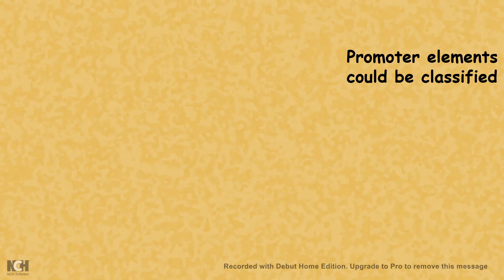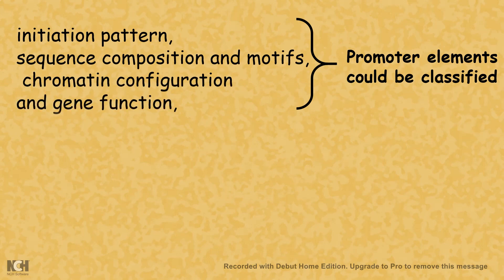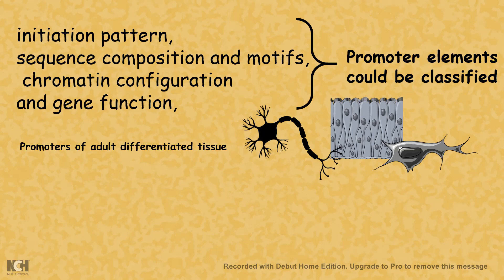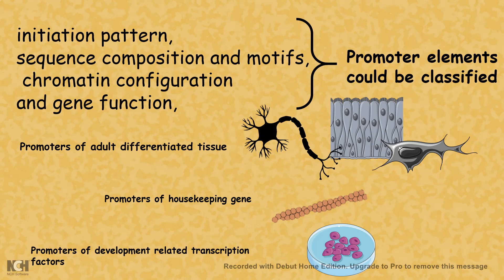Promoter elements can be classified based on several parameters such as initiation pattern, sequence composition motifs, chromosome configuration, and gene function. Based on these classifications, promoters can be differentiated as promoters of adult and differentiated tissues — such as neurons, skin cells, or fibroblasts — promoters of housekeeping genes such as actin, and promoters of developmentally related transcription factors such as the SOX2 promoter, which is important for stem cell maintenance.